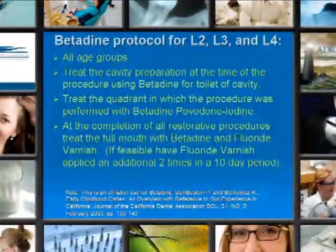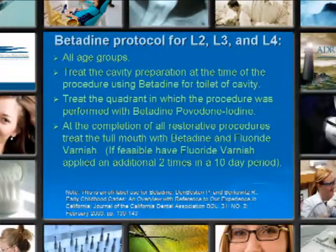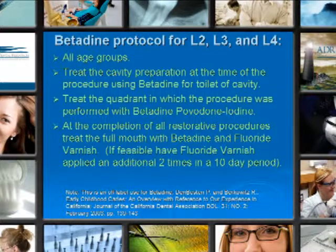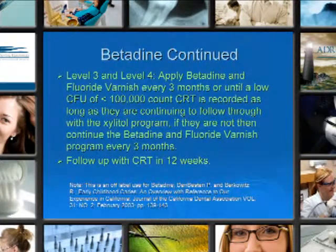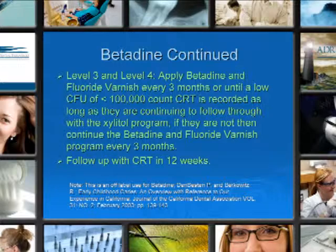Betadine protocols for levels 2, 3, and 4: for all age groups, treat the cavity preparation at the time of the procedure before using betadine in the floor of the cavity. Treat the quadrant in which the procedure was performed with betadine, and at the completion of all restorative procedures, treat the full mouth with betadine-fluoride varnish. For levels 3 and 4, apply betadine and fluoride varnish every three months or until a low colony-forming unit bacterial count is recorded. Follow up with the CRT in 12 weeks.